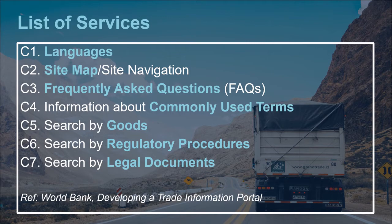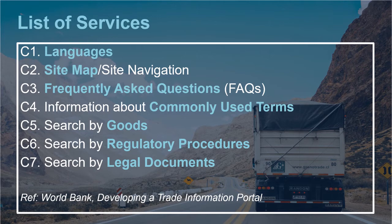Just like our list of expected content, this list of services is not exhaustive and really depends on what may already be available. Some of the services, like a search function for legal documents, may be more efficiently presented as a separate portal covering all the country's legal documents, with the TIP then only linking to that portal, depending upon how user-friendly that portal already is from the standpoint of targeted TIP users. You may also note that some of the services, like the FAQ and information about commonly used terminology, also include their own content, which may be evaluated for how easy they are to understand, just as we discussed in the last module.